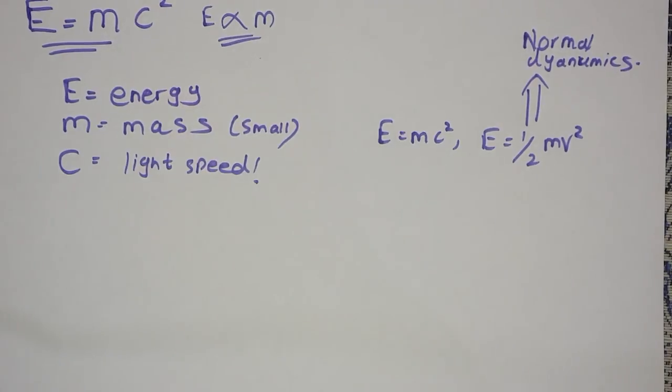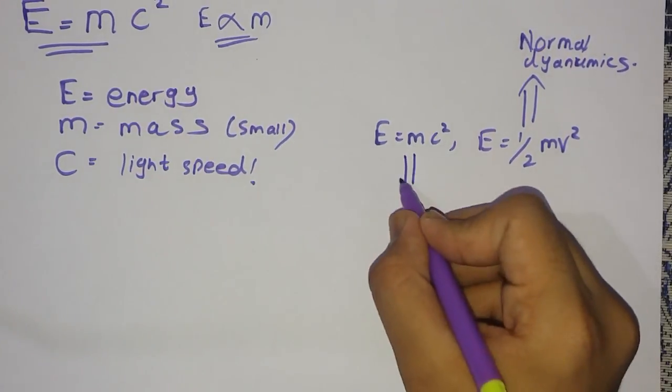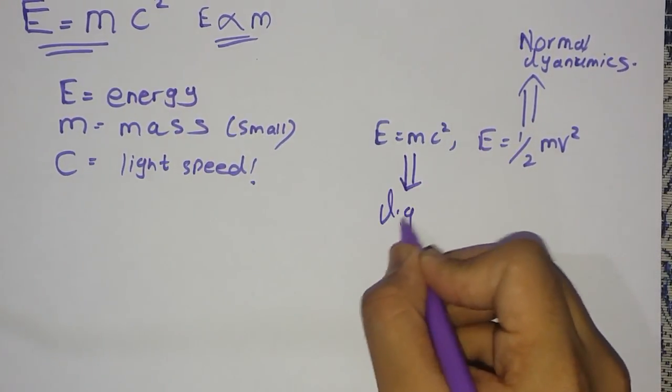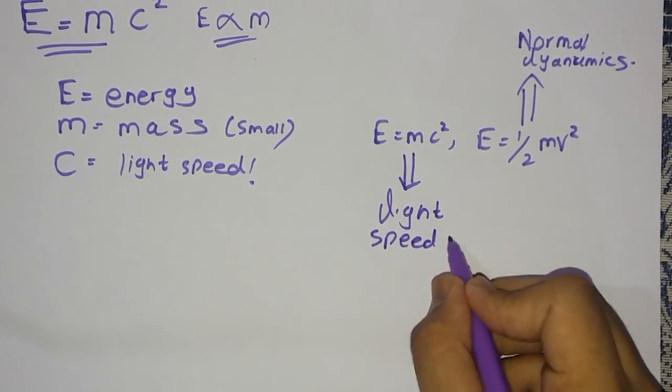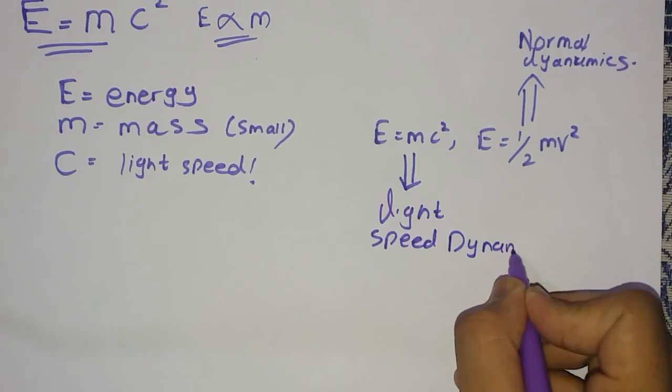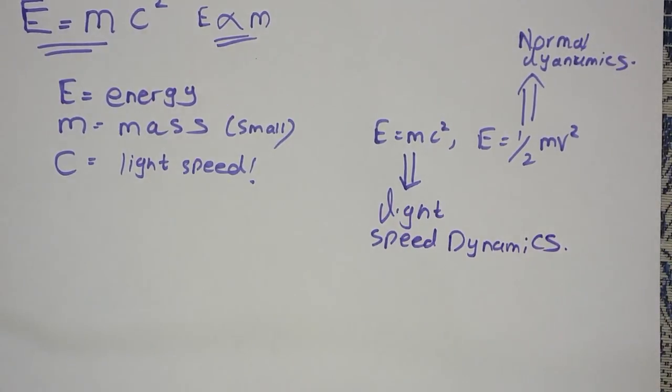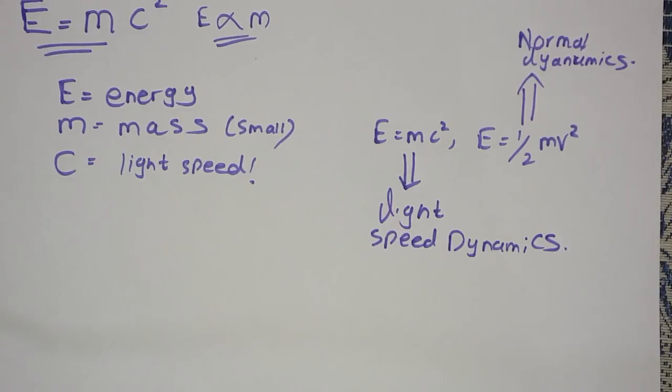And now coming on to E equals M C squared, this formula is used in light speed dynamics. Means, if any particle is reaching near the speed of light, or if any particle is close to speed of light, like 0.01 times C, 2C.